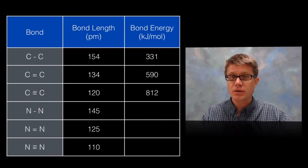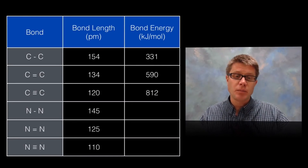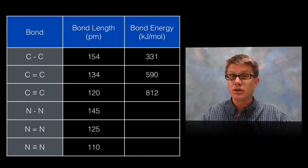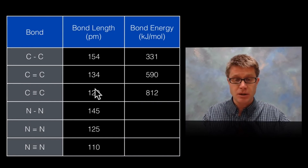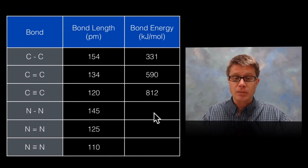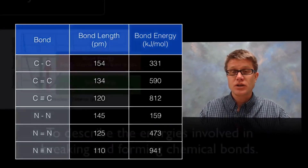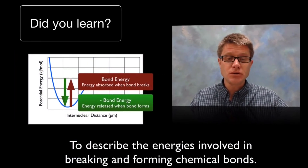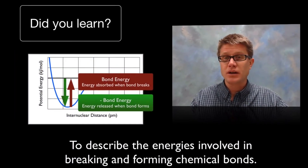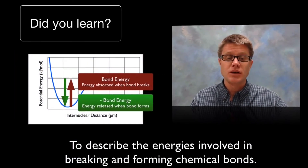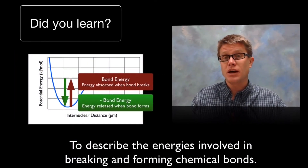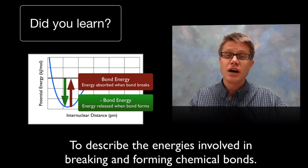If we measure the same thing with nitrogen — single, double, triple bond — we find that we're decreasing the bond length again. So what's going to happen to our bond energy? It's going to increase over time. And so, did you learn to describe the energies involved in both breaking and forming chemical bonds? I hope so.